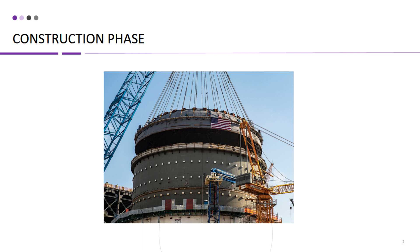The construction phase is the first stage in the life cycle of a nuclear power plant. It involves site selection, obtaining necessary permits and licenses, and building the infrastructure for the plant. Construction is a complex and time-consuming process requiring careful planning and adherence to strict safety regulations. Key activities include site preparation, excavation, concrete pouring, and installation of components such as the reactor, turbines, and cooling systems.